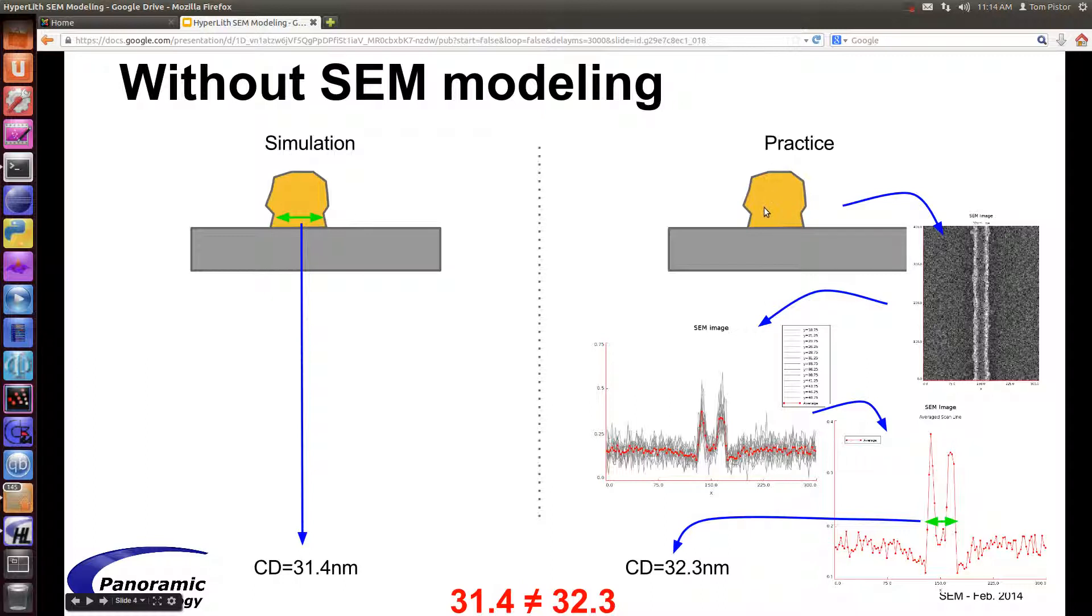But in practice, you can't measure this feature directly. You have to form a SEM image of it. The SEM image gives you a SEM signal, or in this case, several SEM signals that are averaged across 12 cut lines. You're averaging in the Y direction, the cut line is in the X direction, and then you get a SEM signal which some algorithm measures. What you measure in your simulation may be different than what is measured from the SEM image. This is not an apples-to-apples comparison.